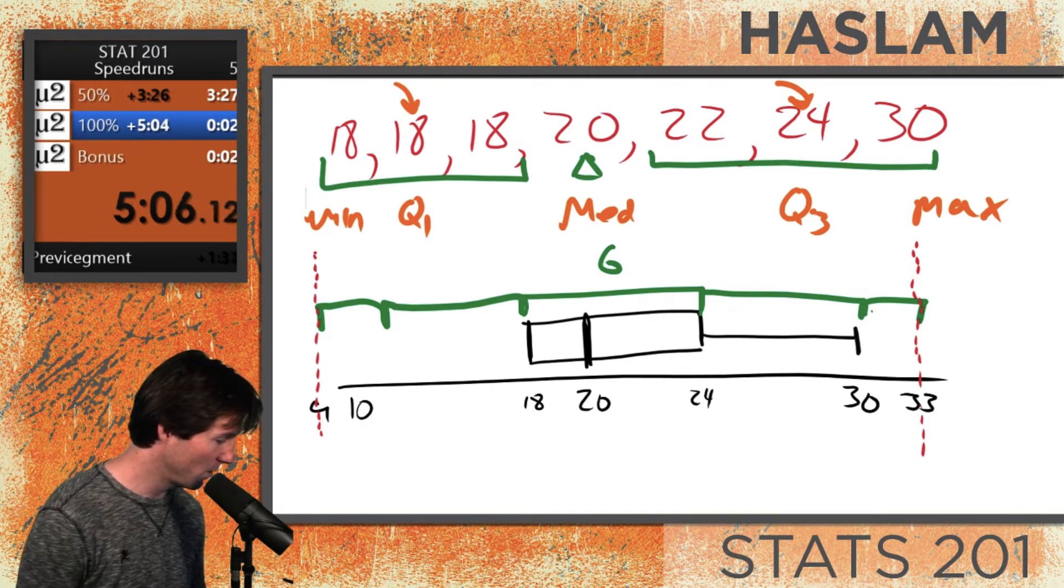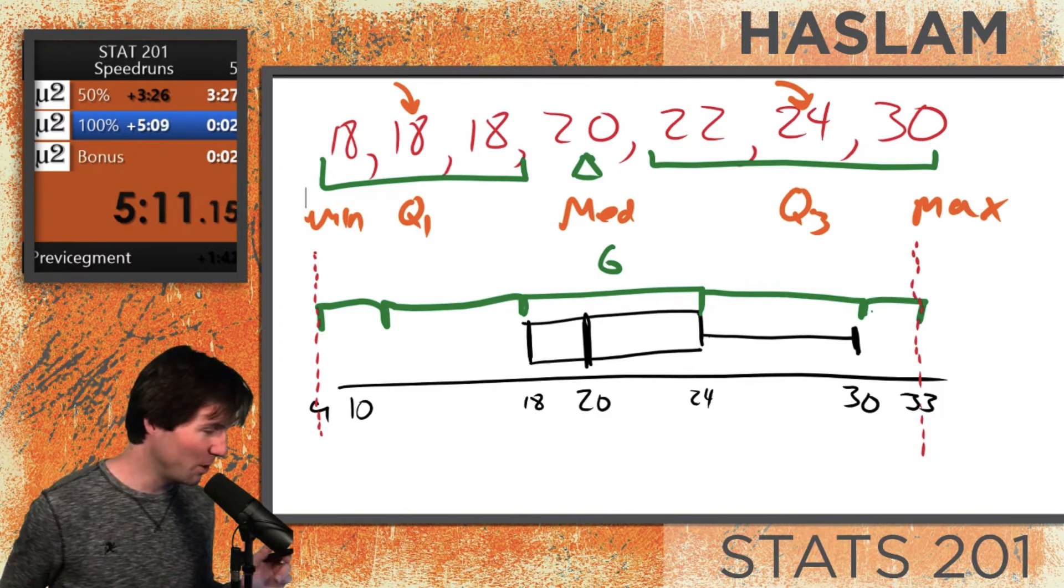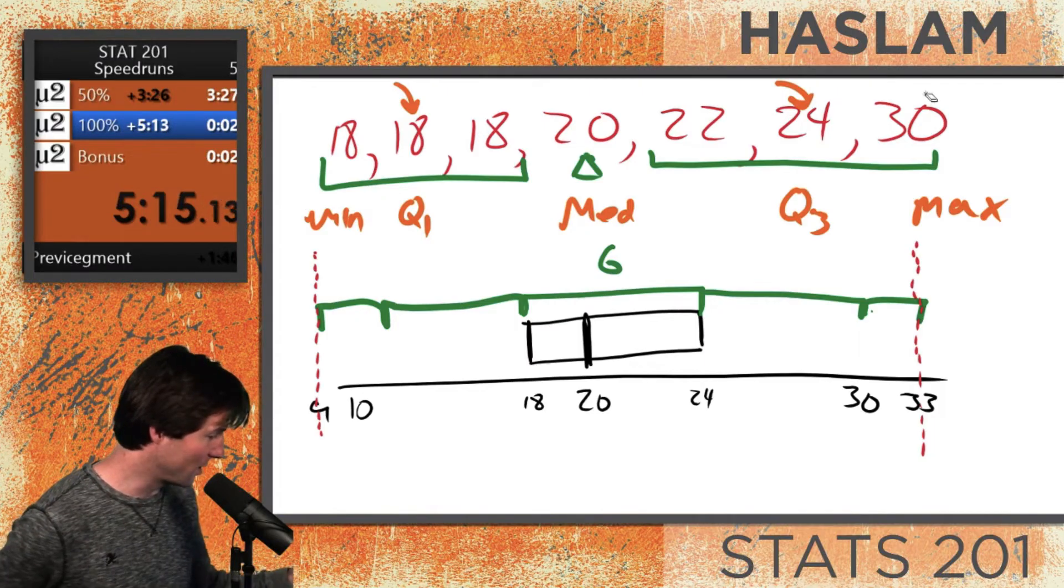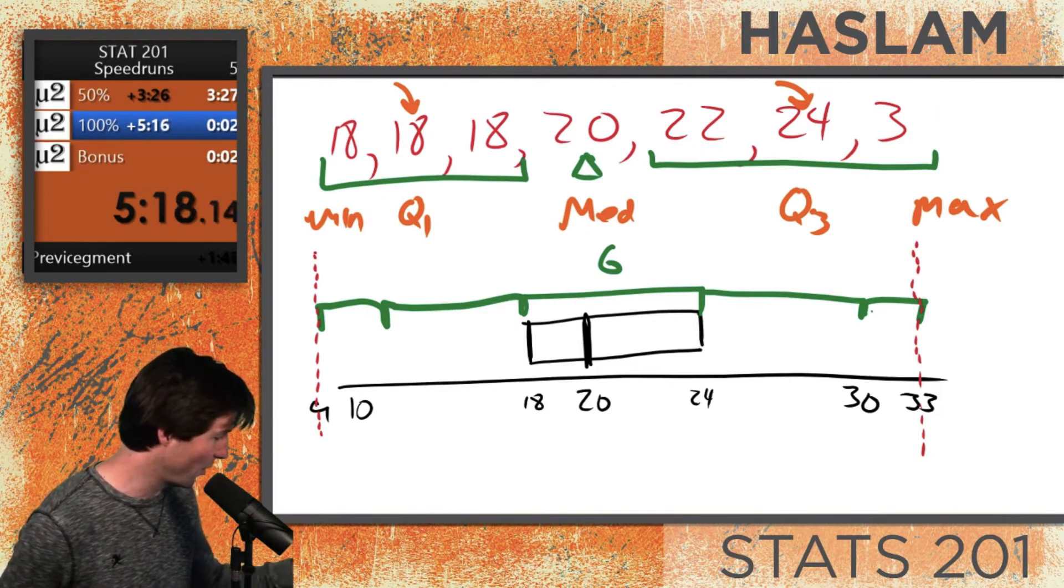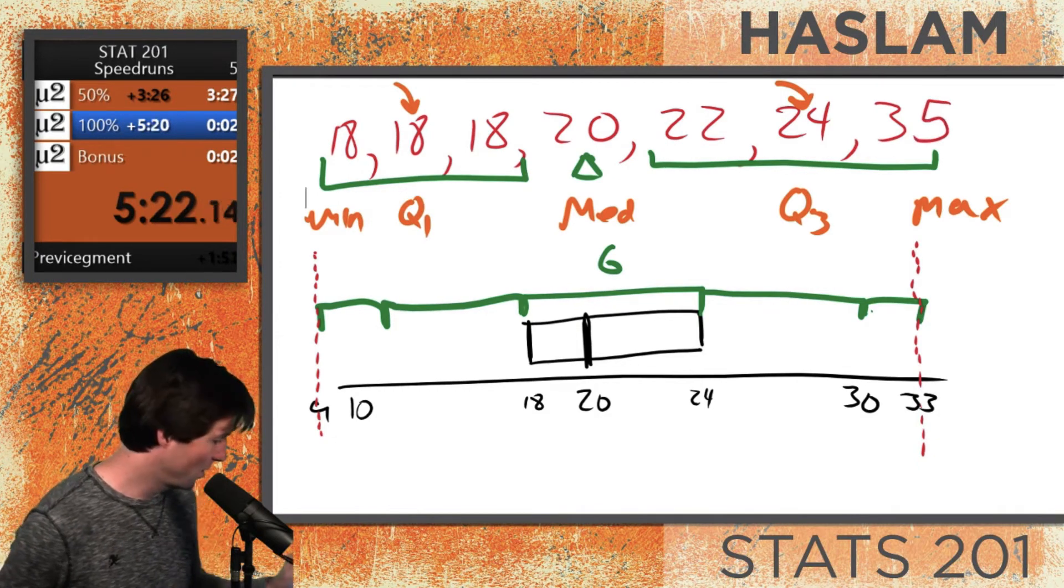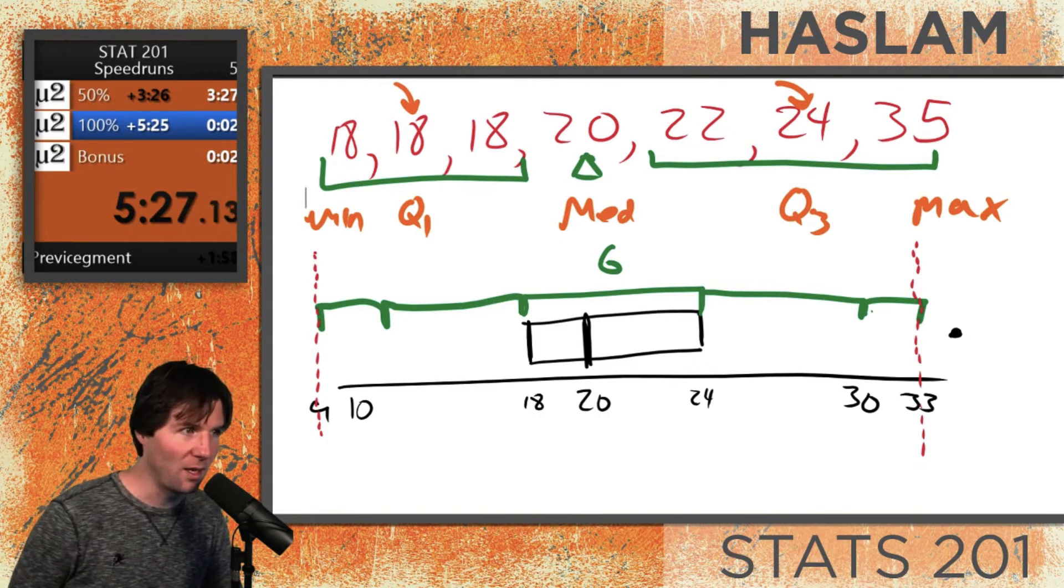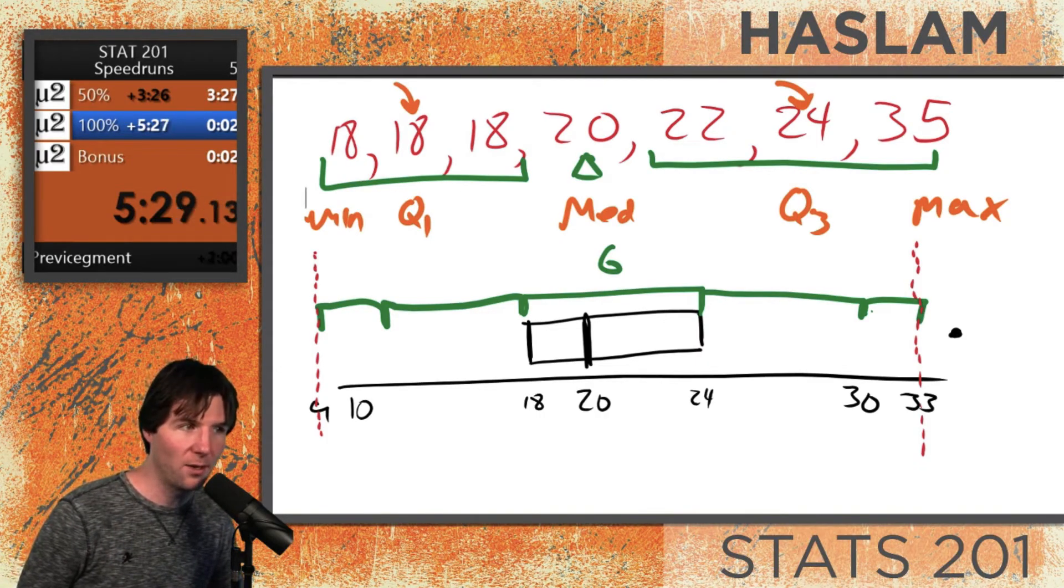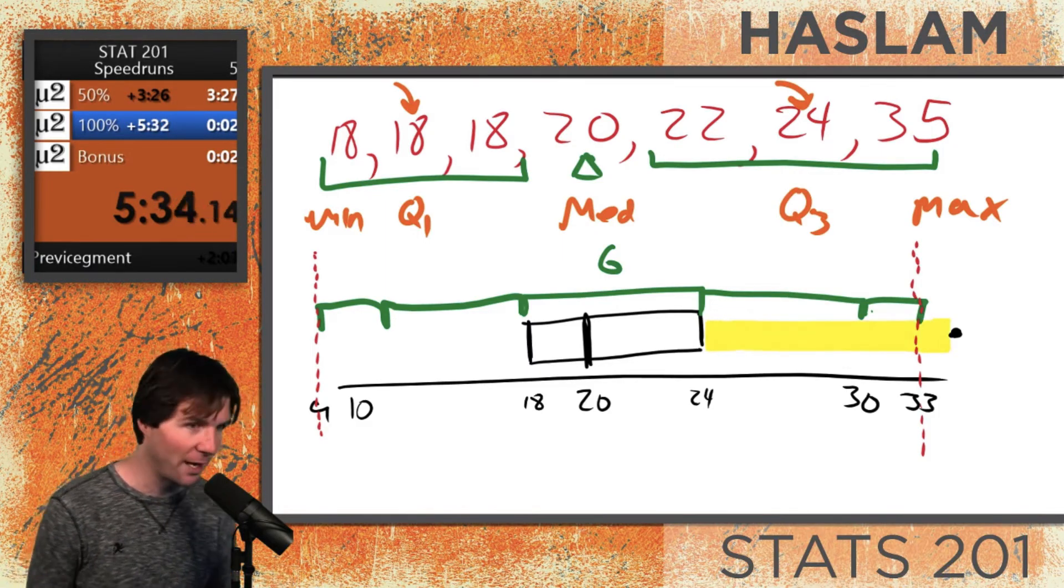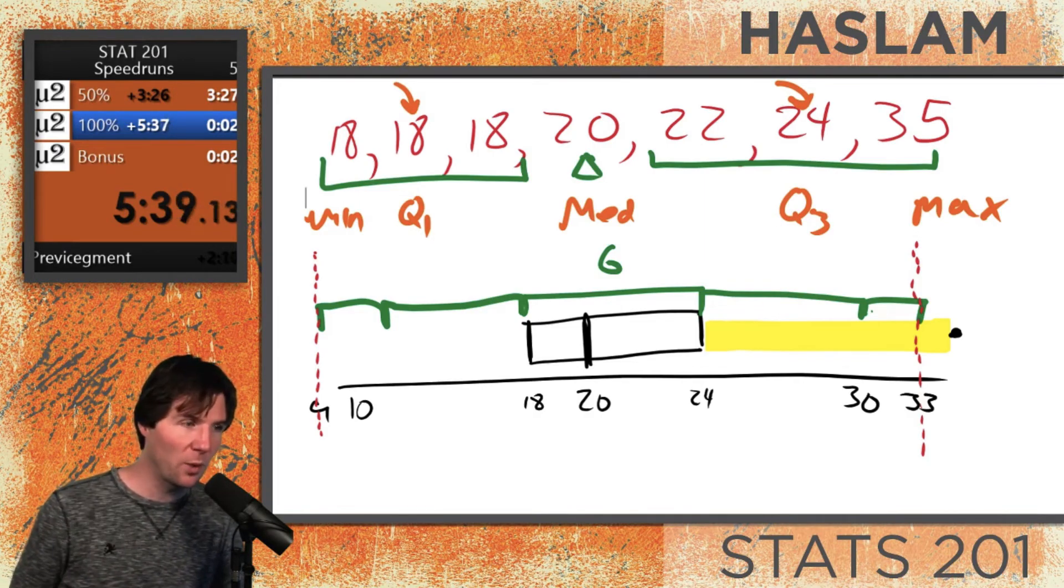If you want to know something really weird, if we change the data, we can get a really weird box plot. If this wasn't 30 and it was something like 35, the box plot would look like this. You would have a box right there, and then you'd have one outlier because right now there is no data between 24 and 35, and 35 would be considered an outlier.